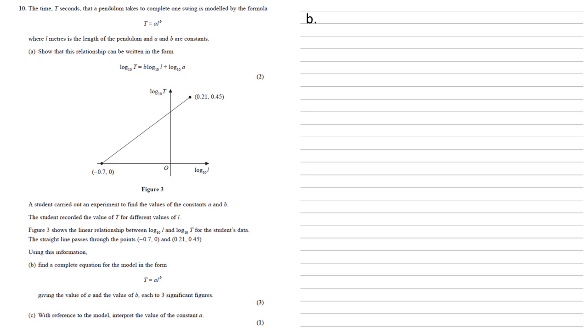So looking at the equation log base 10 t equals b log base 10 l plus log base 10 a, we can see that this is in the form y equals mx plus c and it gives us a straight line on the graph. Where the b is acting as the m, so b must be the gradient of our line.